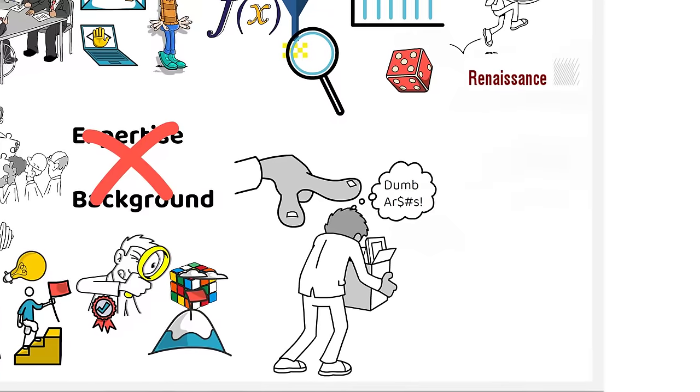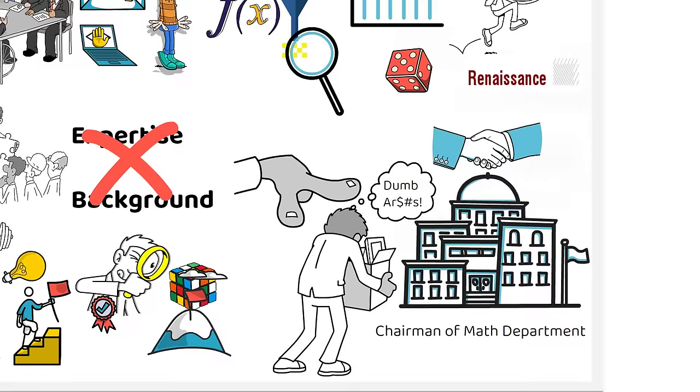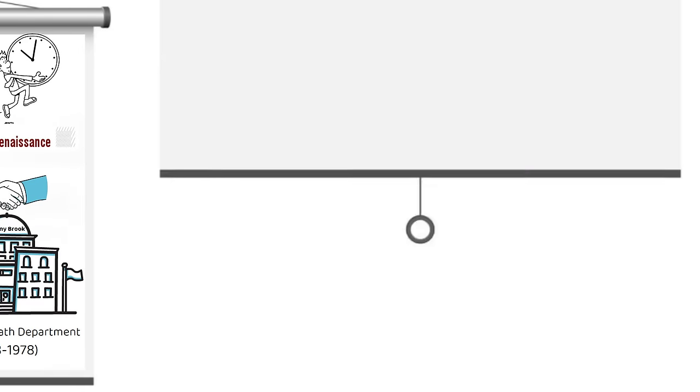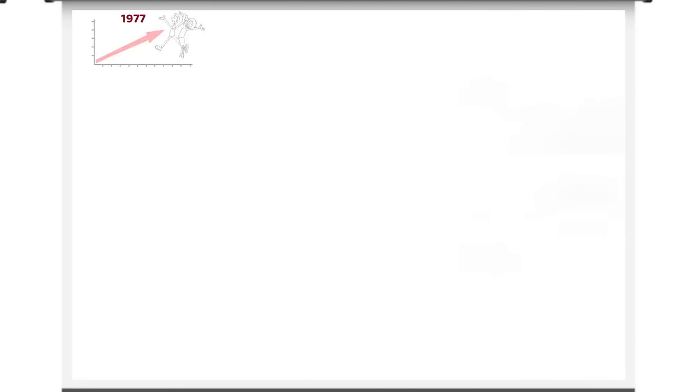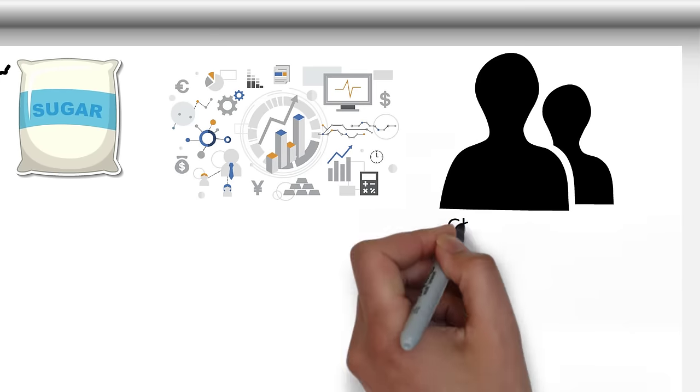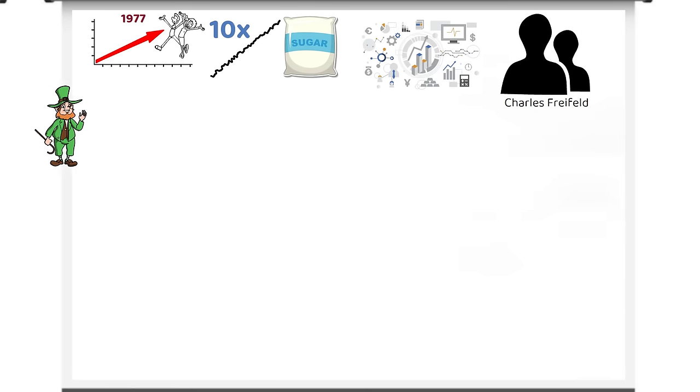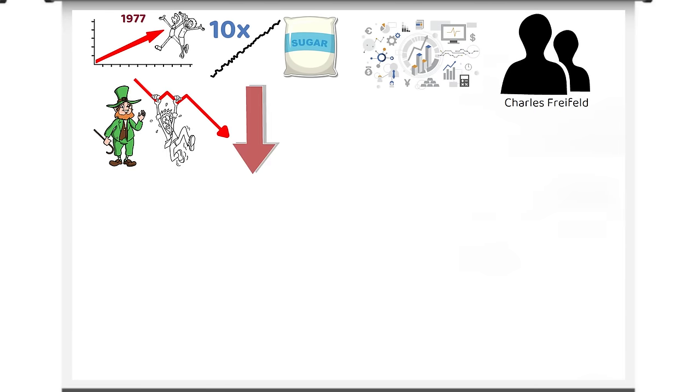Post getting fired from the IDA, Simons was appointed chairman of the maths department at Stony Brook University, where he spent 10 years building a world-class mathematics university department. In 1977, the speculation bug finally bit Simons when he made close to a 10x return trading sugar using a quantitative econometric model developed by a friend named Charles Freifeld. Though the return was possibly luck, because prices plummeted soon after, contrary to what the model predicted.